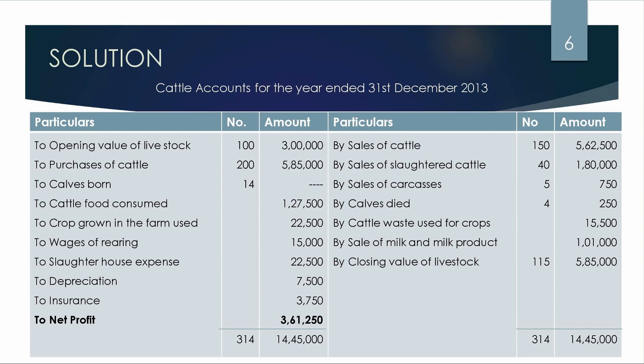We have information about crop worth Rs. 22,500 grown on the farm that was used for feeding — this goes on the debit side as 22,500. Wages estimated for rearing are 15,000. Slaughterhouse expenses came to 22,500. Depreciation is 7,500. Insurance is 3,750. These are all expense items. Next, cattle waste used for crop division is 15,500.